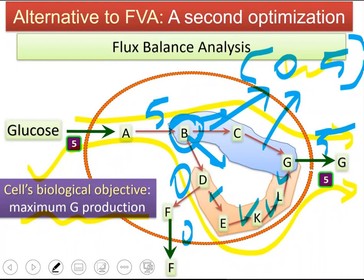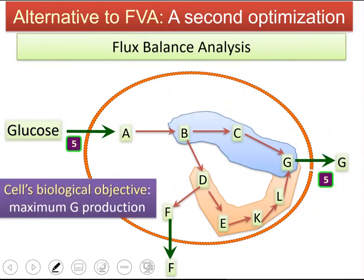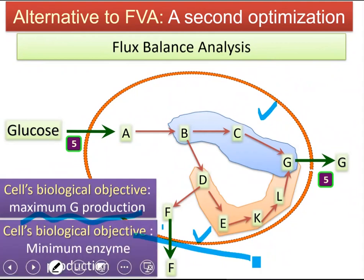Here I was talking about another alternative for flux variability. Now I'm introducing it — this is based on a second optimization, a second objective function. One objective function used so far was the maximum G production. If we use a second objective function, we can constrain which of those paths are active. And this second objective is minimum enzyme production.